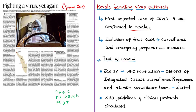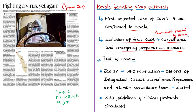Kerala reacted immediately due to its surveillance and emergency preparedness measures, launched as soon as the outbreak was known. After the WHO notification on January 18th, officers of the Integrated Disease Surveillance Program and district surveillance teams were alerted to increase surveillance of SARS-like and influenza-like illnesses. WHO guidelines and clinical protocols were circulated to all districts. All health personnel were asked to undertake surveillance monitoring and contact tracing exercises, building on experience from the 2018 Nipah virus outbreak.